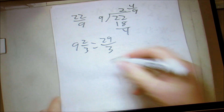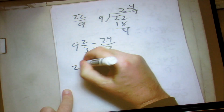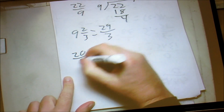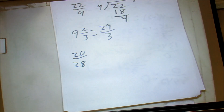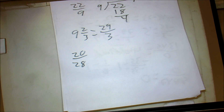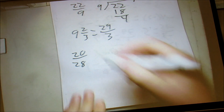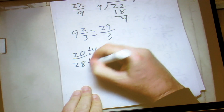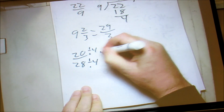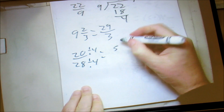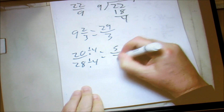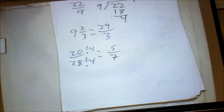If we have 20 over 28 and need to reduce it, the biggest number that goes into both is 4. We divide each by 4 and get 5 over 7.